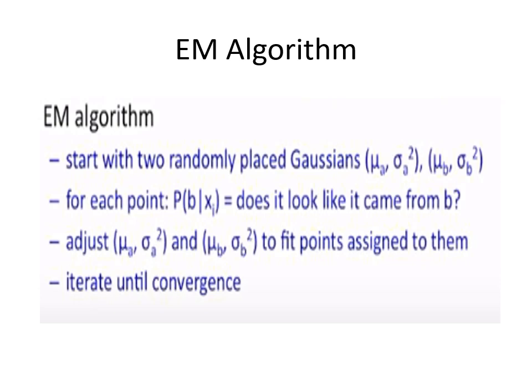In such cases, your expectation maximization algorithm comes in handy. The algorithm is pretty simple. You start with two randomly placed Gaussians with mean and standard deviation and for each of the points, you try to estimate what is the probability of that point belonging to the first Gaussian or to the second Gaussian. Based on that estimate, you adjust the value of mean and standard deviation till such time all the points are assigned to either of the clusters. Iterate until convergence is reached.